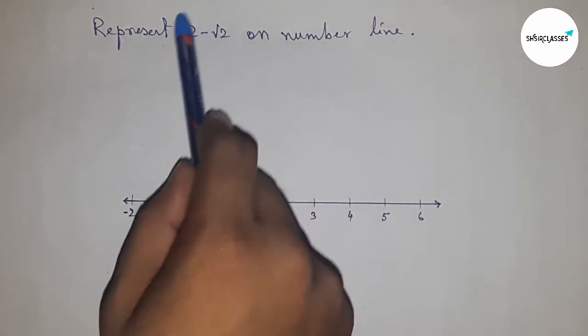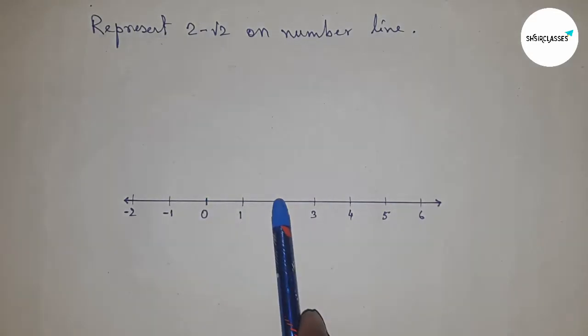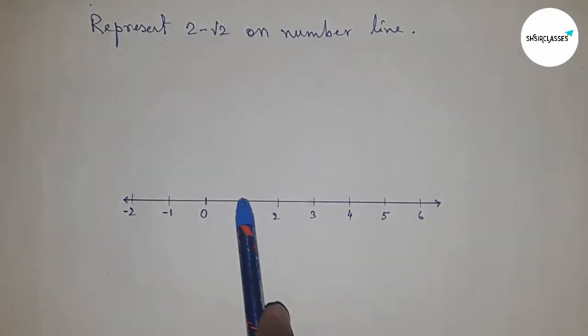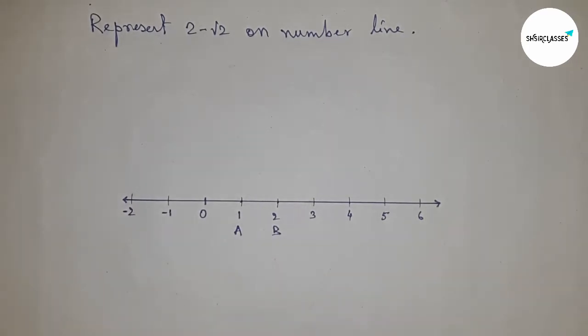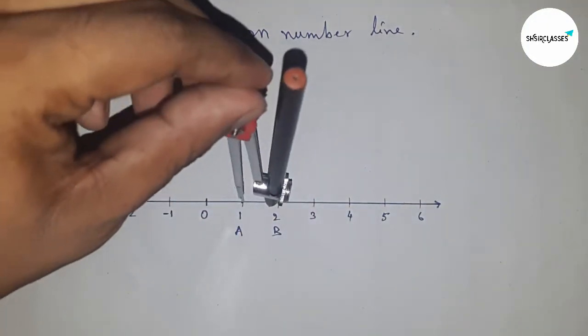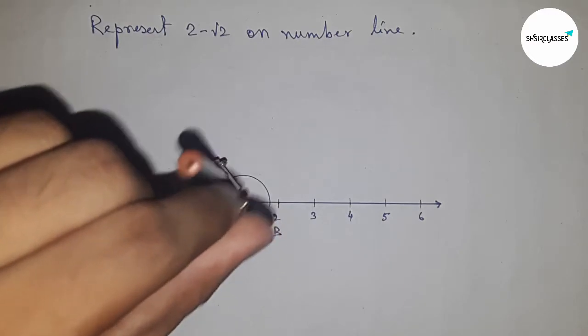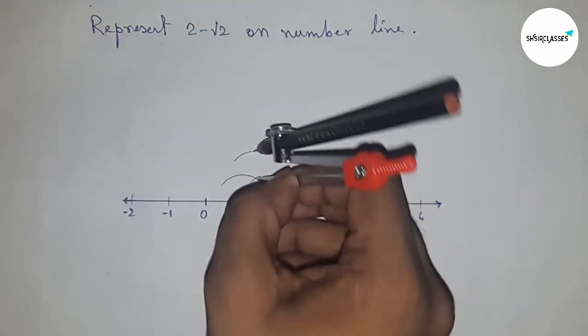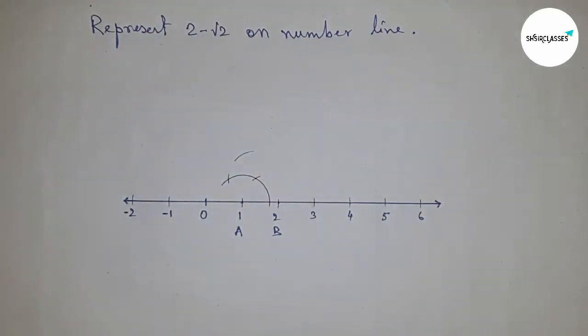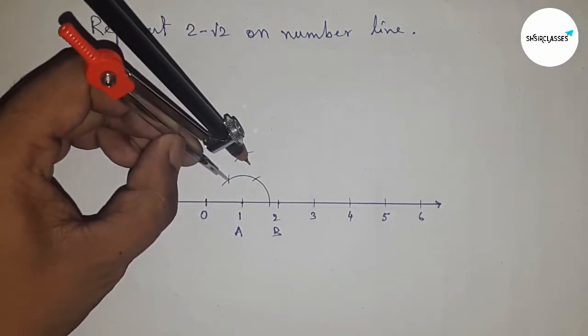Next, we have to construct 2 minus root 2 on the number line, so between one and two. First, we'll draw root 2 on one. We have to construct root 2 on one because we need to subtract root 2.